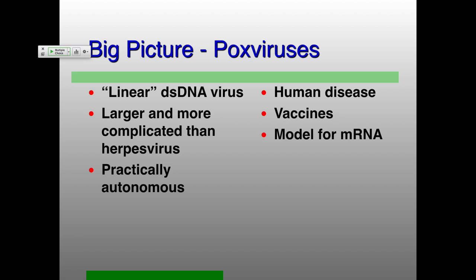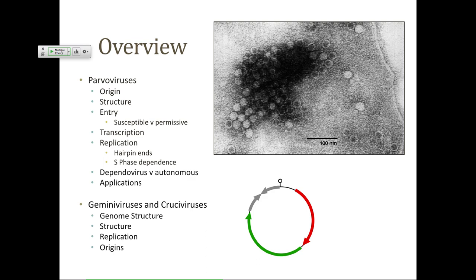As far as the parvoviruses, geminiviruses, and cruciviruses are concerned — this is another major subject of the work we're doing in our lab right now — we're trying to figure out how a single-stranded DNA virus stole an RNA virus capsid protein gene, which is kind of unheard of. I didn't believe it for a long time until a graduate student finally convinced me. This was too much fun not to follow up on.